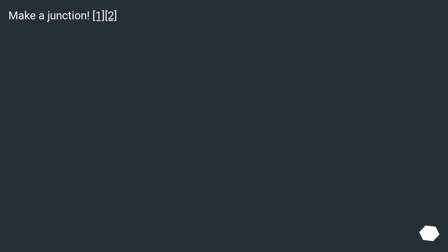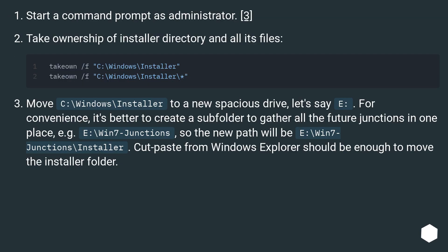Another option: make a junction. Step 1: make a junction. Step 2: start a command prompt as administrator. Step 3: take ownership of the installer directory and all its files. Step 4: move C:\Windows\Installer to a new spacious drive — let's say, drive E.